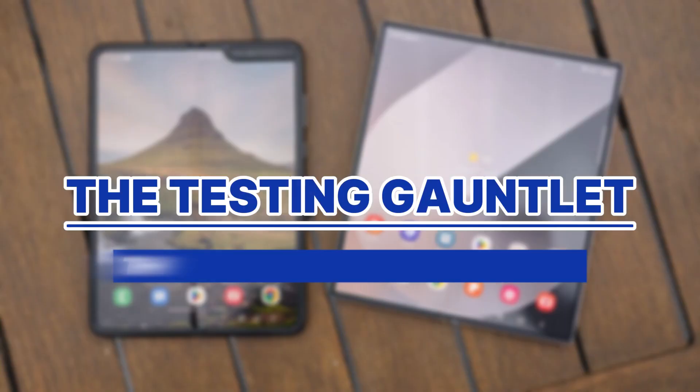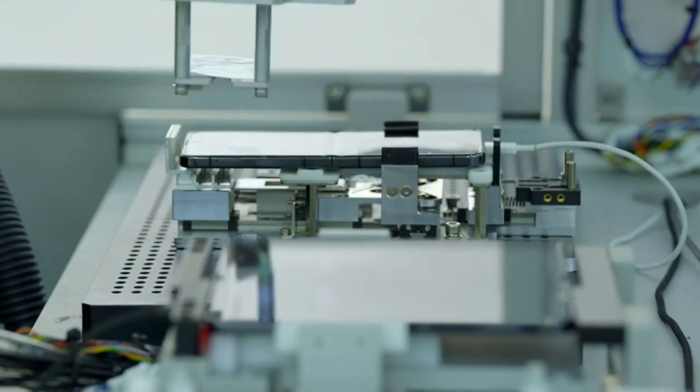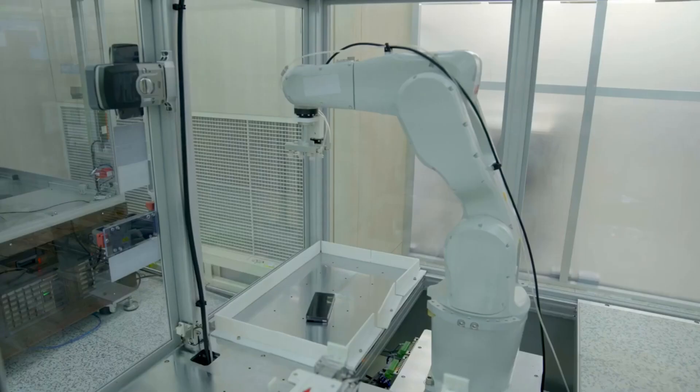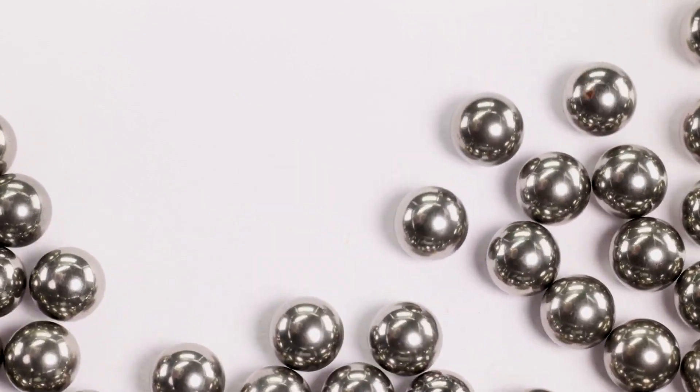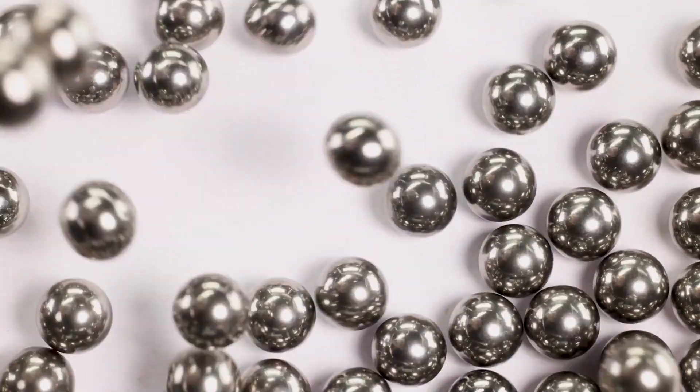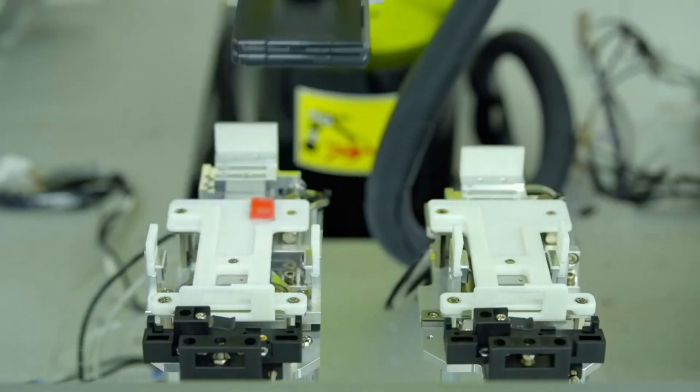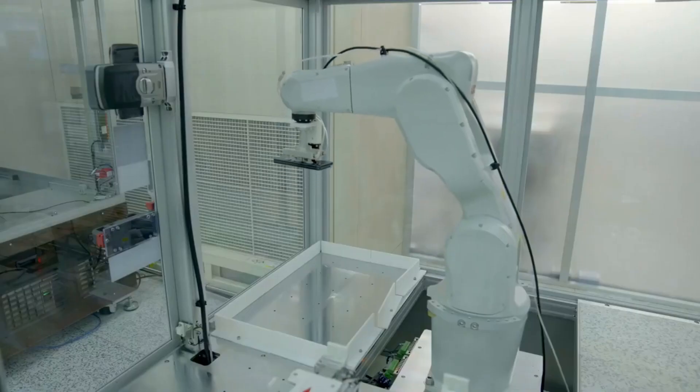Before any Samsung phone reaches your hands, it goes through what I can only describe as technological torture. Picture this, robots continuously dropping steel balls onto phone screens from 45 centimeters high. Other robots are dropping entire phones from 60 centimeters onto hard surfaces. Over and over again.